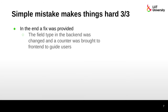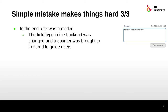In the end, a fix was provided: the field type in the backend was changed, and a character counter was added to the front end to guide users. Now when a user writes a comment, they can see, for example, '33 characters written, 967 characters left.' The user can see they cannot write more than 1,000 characters, and it is impossible to save a longer comment, so that error can no longer occur.